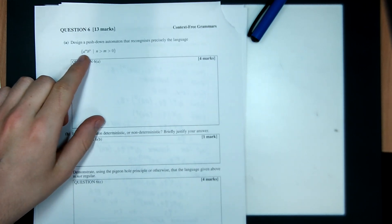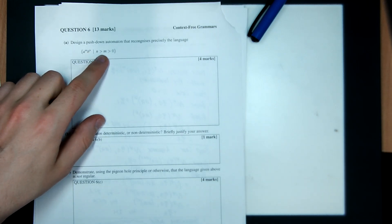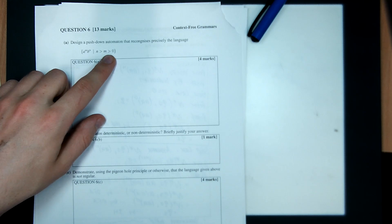Alright, question 6, we're on a roll. Design a pushdown automaton that recognizes precisely the language A to the M, B to the N, where there's strictly more B's than A's, and there's at least one A.